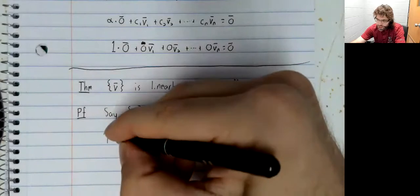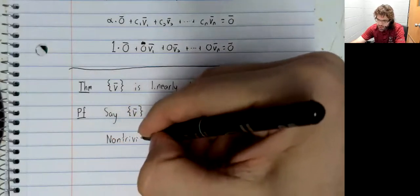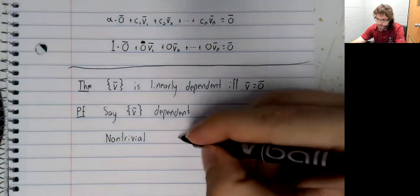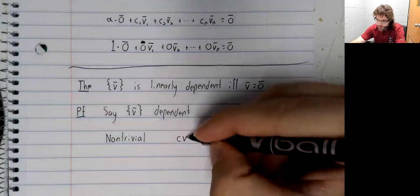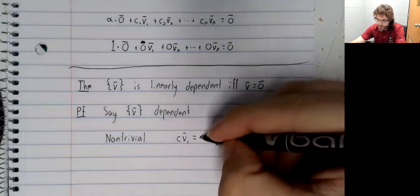Well, with a single vector in the set, a linear combination looks like this.